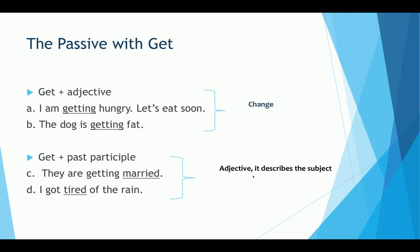The passive with 'get.' You can find passive sentences using 'get.' Examples: 'I am getting hungry — let's eat soon.' 'The dog is getting fat.' In these two examples, 'get' gives the idea of change — the idea of becoming, beginning to be, growing to be. If I say 'I'm getting hungry,' I was not hungry before, but now I'm beginning to be hungry.